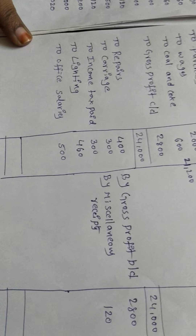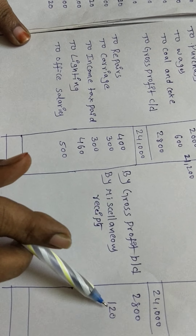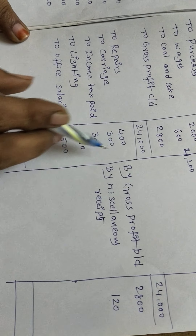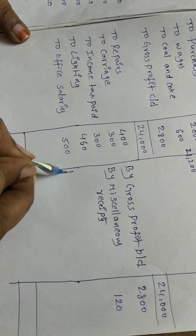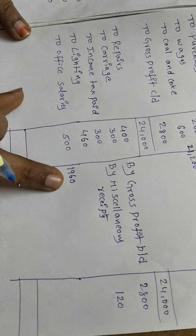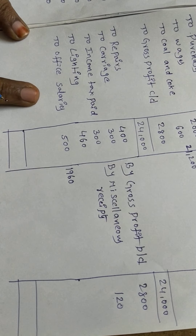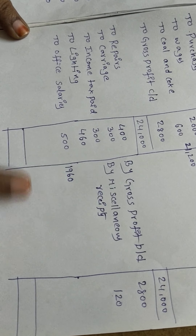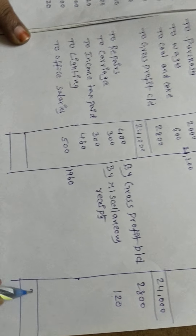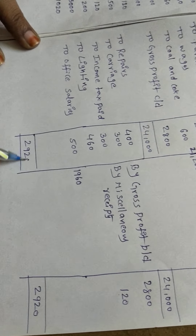Now we add both sides. Credit side has 2,920 and debit side has 1,960. Credit side has more balance, so we record 2,920 on both sides.